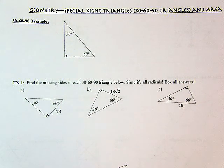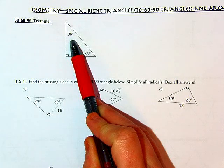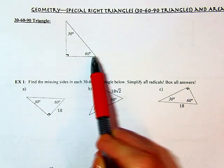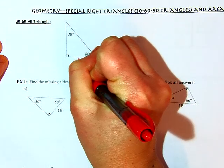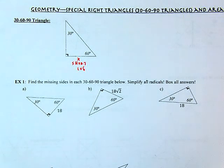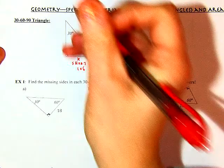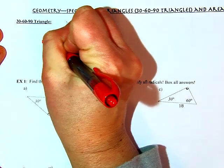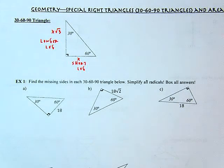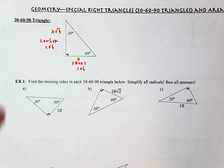When looking at a 30-60-90 triangle, we have two legs. We call one of the legs the short leg — it's opposite the smallest angle, so we call that x. We have a longer leg opposite the 60-degree angle, so our longer leg is x root 3. And then our hypotenuse, the longest side opposite the 90-degree angle, is 2x.